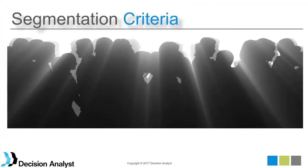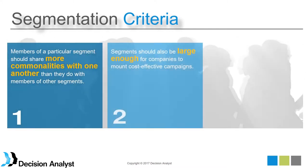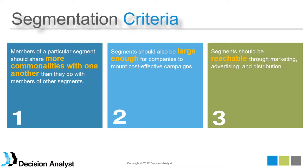What are some segmentation criteria? How do we decide among several solutions? At Decision Analyst, we have three main criteria that must be reached. The first is that segment members share more similarities with one another than with members of other segments. The second is that segments need to be large enough for client companies to mount cost-effective advertising campaigns — we reject solutions with many tiny segments. The third is that segments need to be reachable, for media buys and media planning.